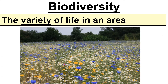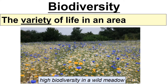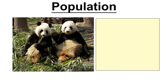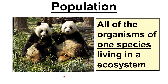Then biodiversity — that is the variety of life in an area. You would imagine this has got relatively high biodiversity; you've got lots of different flowering plants in there. Then a population — that's all the organisms of one species living in an ecosystem. So here we have a population of giant pandas, or two members of that population.